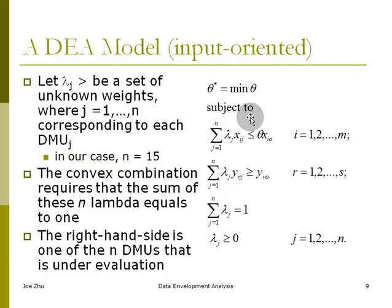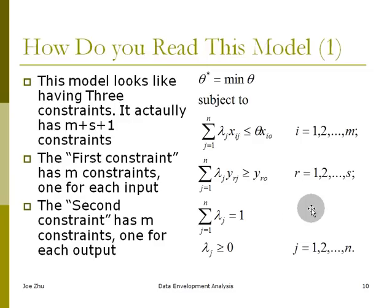If the answer is yes, then that means that DMU is not efficient, and if the answer is no, that means the DMU is efficient. It's on the frontier. You will know that by solving this model. In a sense, if the optimal solution to theta is equal to one, that means the inputs cannot be reduced in the same proportion. That means the DMU is on the frontier. Now, this model may appear that you only have three constraints, but if you look carefully, this one actually has m constraints, one for each input, and then you have s constraints, one for each output.